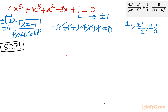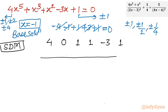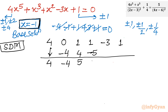Now I will use the synthetic division method (SDM). Writing the quintic coefficients: 4, 0, 1, 1, negative 3, 1 — where 0 is the missing x power 4 coefficient. Using base solution x equals negative 1: bringing down 4, then minus 1 times 4 is minus 4, giving minus 4; minus 1 times minus 4 is 4, giving 5; minus 1 times 5 is minus 5, giving minus 4; minus 1 times minus 4 is 4, giving 1; minus 1 times 1 is minus 1, giving 0. These are the coefficients for the quartic equation.